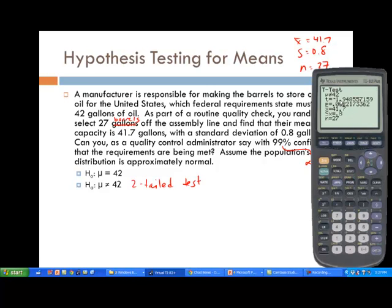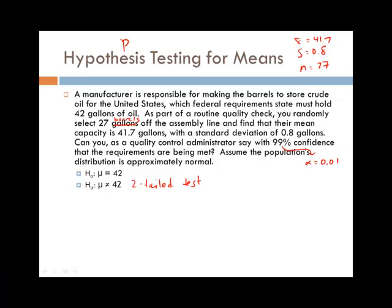So it looks like the test statistic is negative 1.94856, and the p-value is 0.0622. 0.0622 for the p-value, not good enough. So that would be greater than alpha, which is 0.01. So we would fail to reject the null hypothesis here.